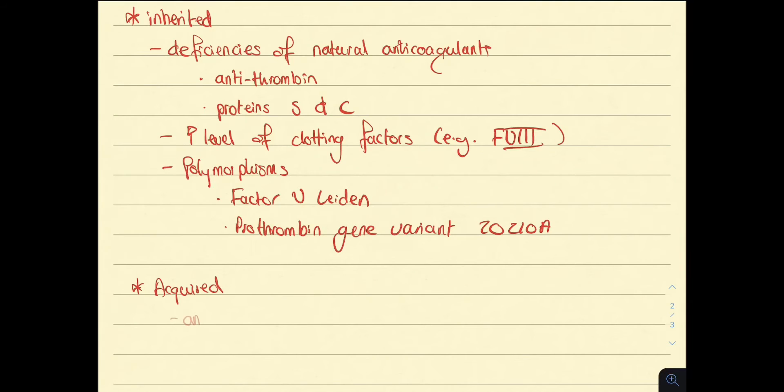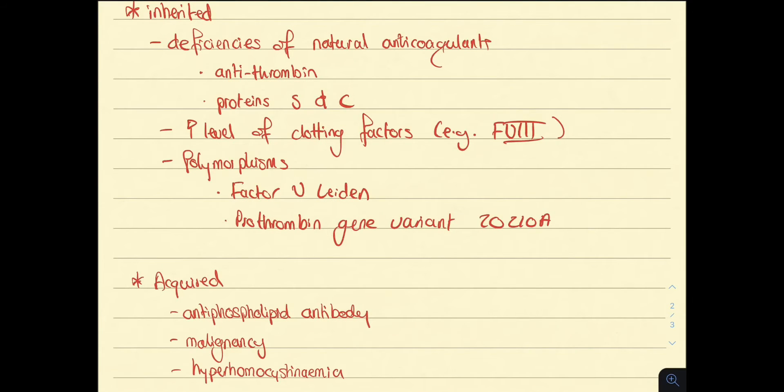The acquired etiologies include antiphospholipid antibody, malignancy and hyperhomocystinemia. There can also be acquired elevations of factors or deficiencies of natural inhibitors.